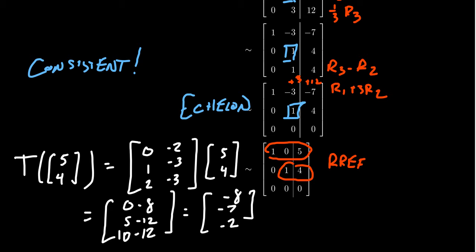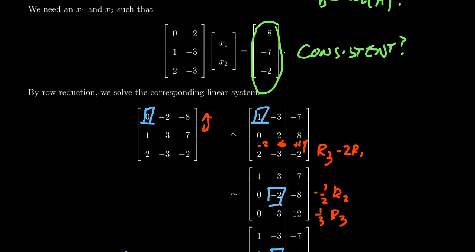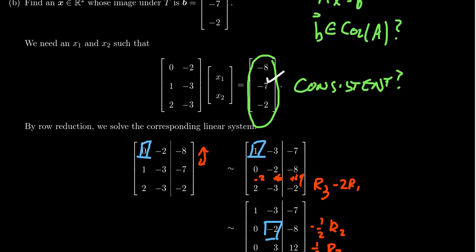This confirms that (−8, −7, −2) is inside the column space of the matrix — it's inside the image of the function. We can consider all the same types of questions with a matrix transformation that we did with linear transformations before, and having a matrix makes life a little easier. That brings us to the end of section 2.2; in the next section we'll talk about linear independence.